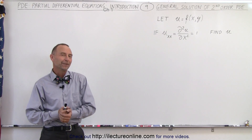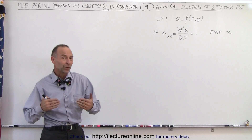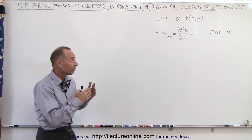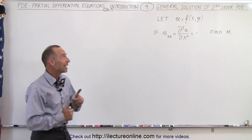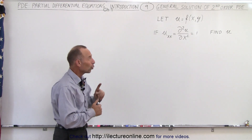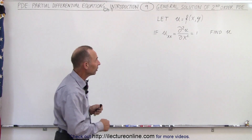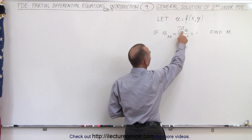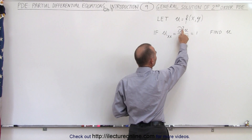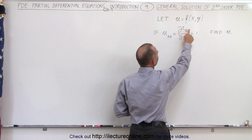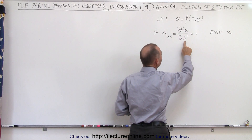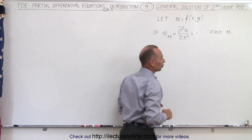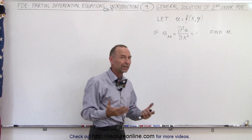Welcome to our lecture online. To make sure that we understood the previous video, let's try to solve this problem. We have a second-order partial differential equation: u sub xx, which means the second partial derivative of u with respect to x, is equal to 1. We're trying to find the solution, therefore find u.